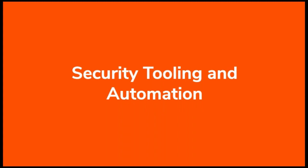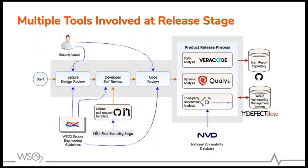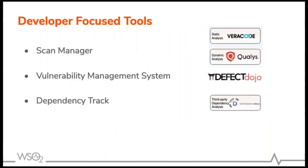Let's talk about security tooling and automation. Looking at the summary diagram once again, you can see that there are multiple tools at play. We do not want the platform security team to become a bottleneck for all other teams. Also, we do not want to expose the complexity of all the security tools to our engineering teams. Therefore, we have developed some security tools and automations to cover these aspects. Scan Manager, the vulnerability management system, and Dependency Track are some of these developer-focused tools.